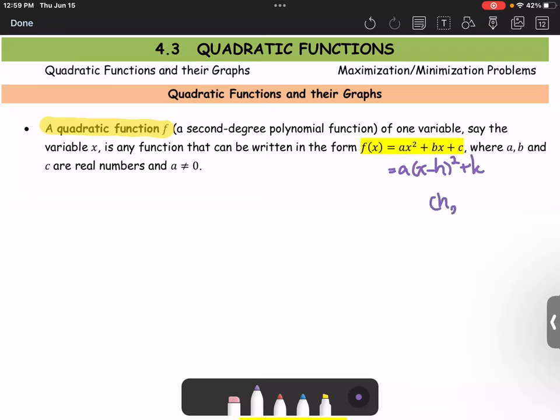The coordinate (h, k) is the vertex of the parabola graph, and we'll find the relationship of h and k in terms of a, b, and c by using the perfect square technique.